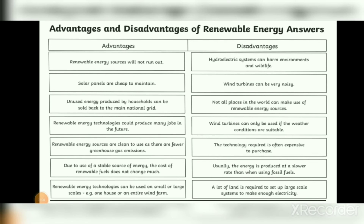Number five: the technology required is often expensive to purchase. Number six: usually the energy is produced at a slower rate than when using fossil fuels. Number seven and the last: a lot of land is required to set up large-scale systems to make enough electricity.